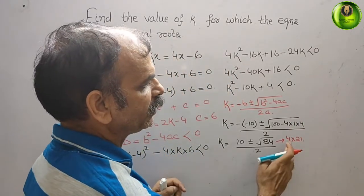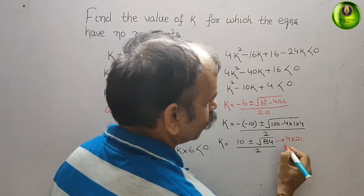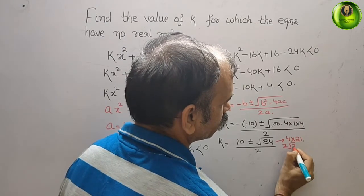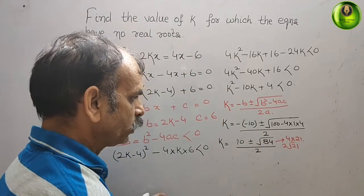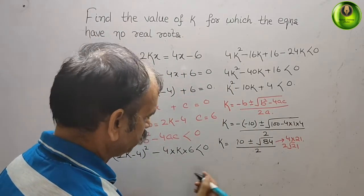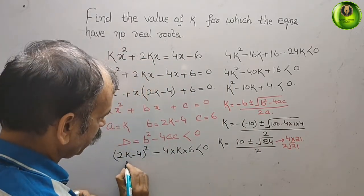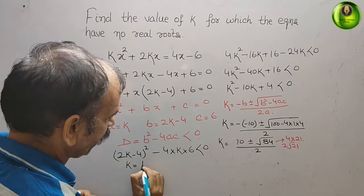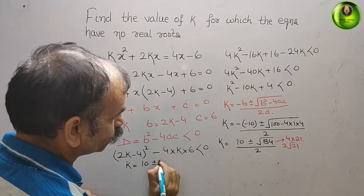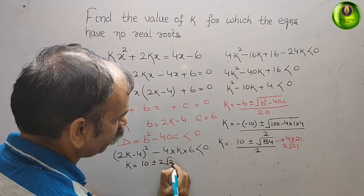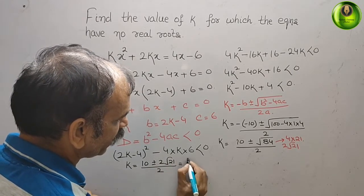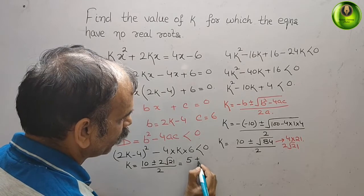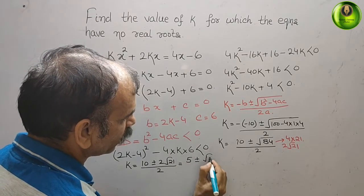Therefore we can say 2√21. Therefore k = (10 ± 2√21) / 2. That is equal to 5 ± √21.